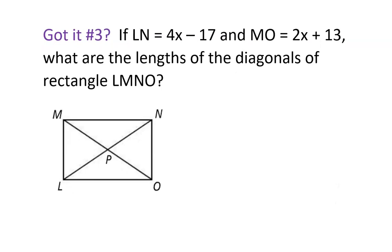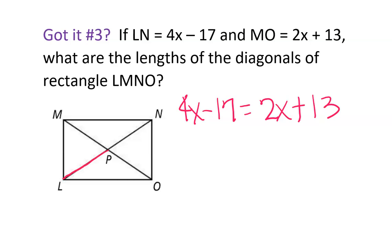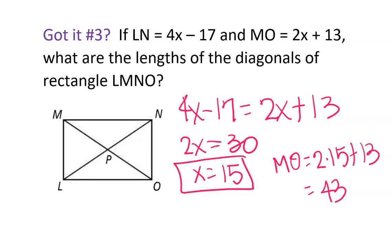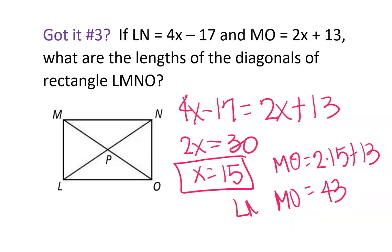For the next problem, diagonals LN and MO are whole diagonals. Set them equal. Sometimes they give you just half the diagonal, so be careful — you'd need to multiply by 2 to get the whole length. X is on the left giving 2x, numbers on the right give 30, so x equals 15. Plugging in: MO equals 2 times 15 plus 13 equals 43. LN is also 43 since the diagonals are equal. If you only list one, that's fine.